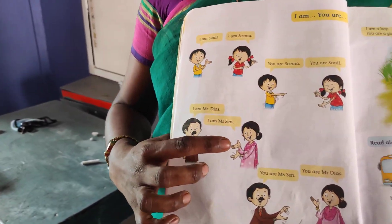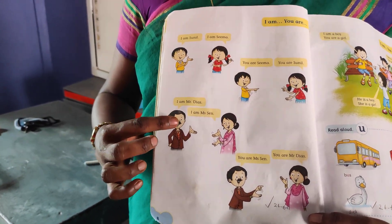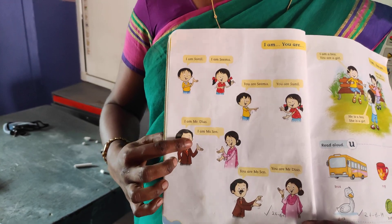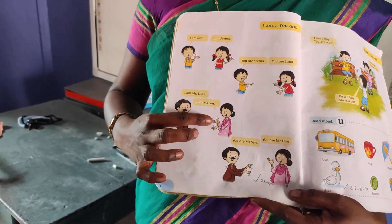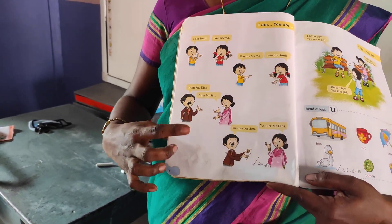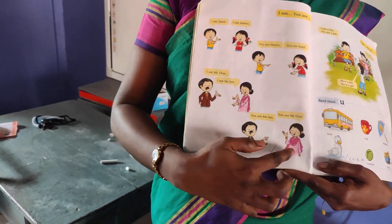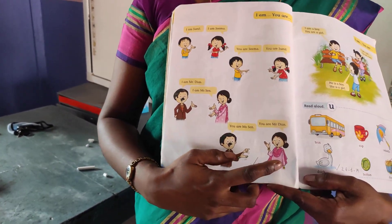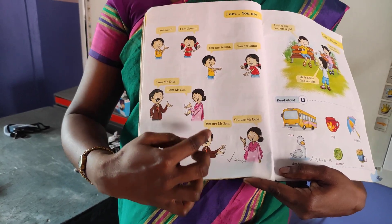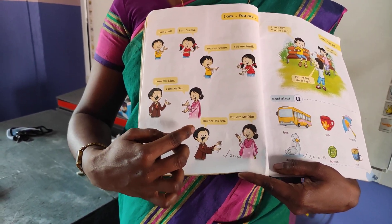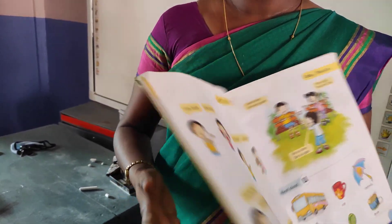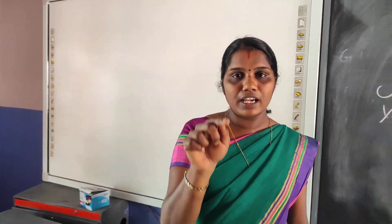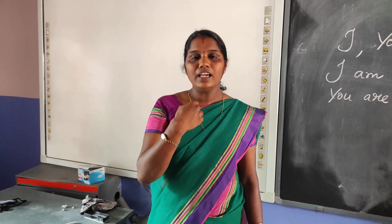Here is a man and a woman. The man says, I am Mr. Diaz. The woman says, I am Miss Sen. The man points to the woman and says, you are Miss Sen. I point to you and say, you are a student. You point to me and say, you are a teacher.